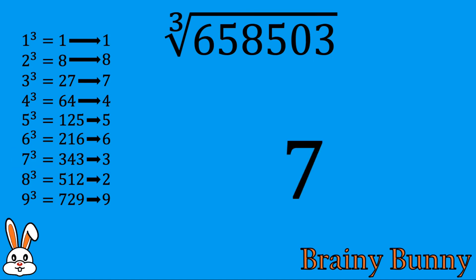Now for the next bit, we just ignore the first 3 digits. So in our case, 503 is ignored. We now move on to the next 3 digits, which is 658. We care about 658 and we find where 658 lies within our table. We can see that 658 falls between 8 cube and 9 cube. Now we take the lower limit, so it would be 8.